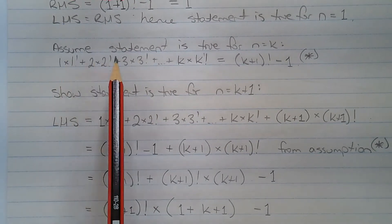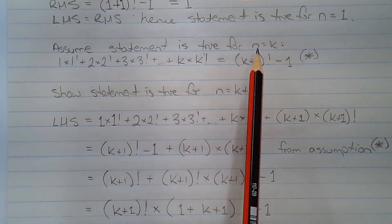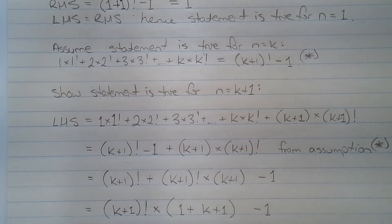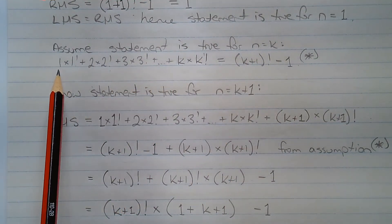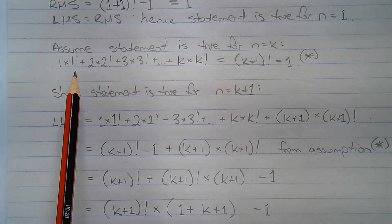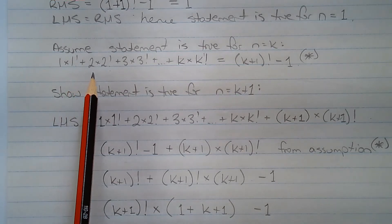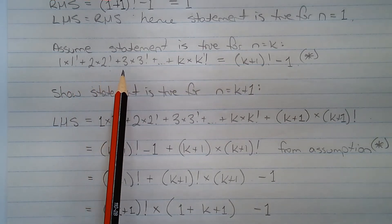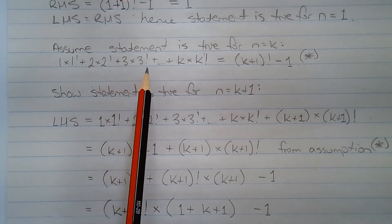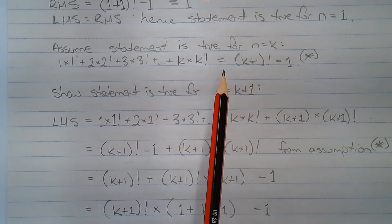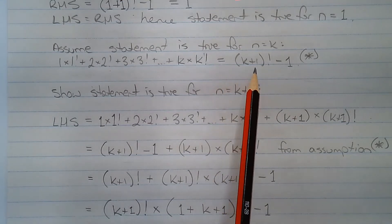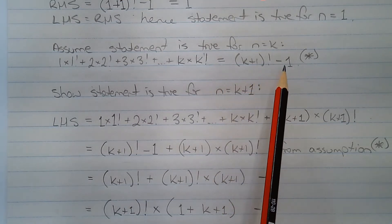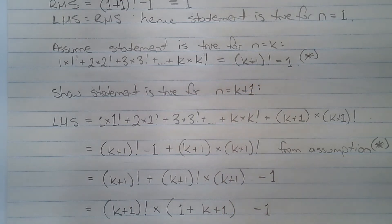Next, we assume the statement is true for n equals k. That is, 1 multiplied by 1 factorial, plus 2 multiplied by 2 factorial, plus 3 multiplied by 3 factorial, and so on, is equal to k plus 1 factorial minus 1. So all we've done is replaced the pronumeral n with the pronumeral k.